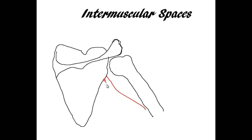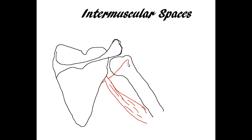Today we will see the intramuscular spaces in the scapular region and the upper part of the humerus. Let's draw a very simple diagram of the muscles that will form the boundary of the intramuscular spaces.